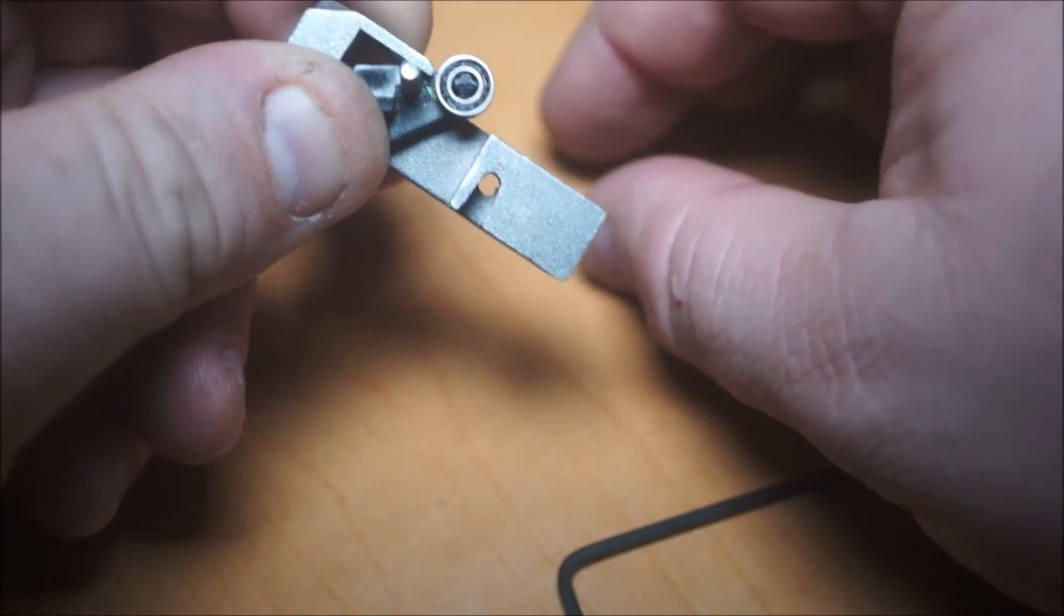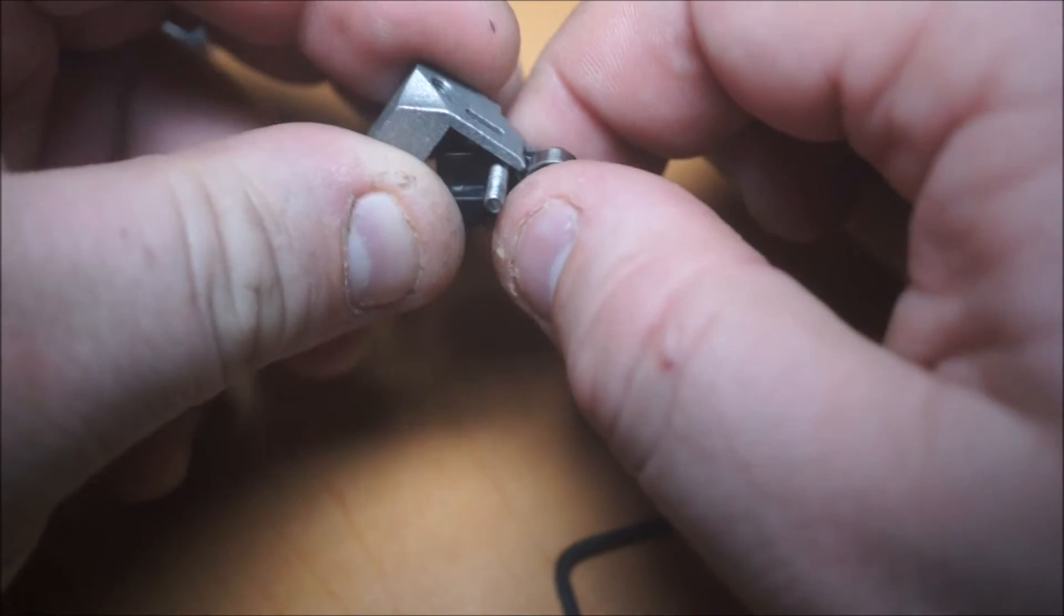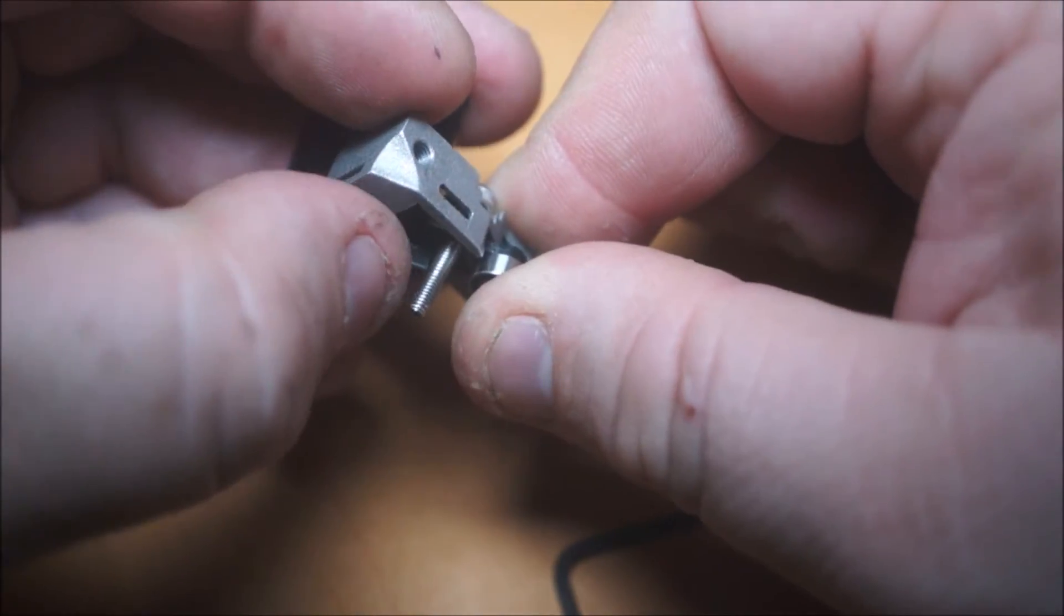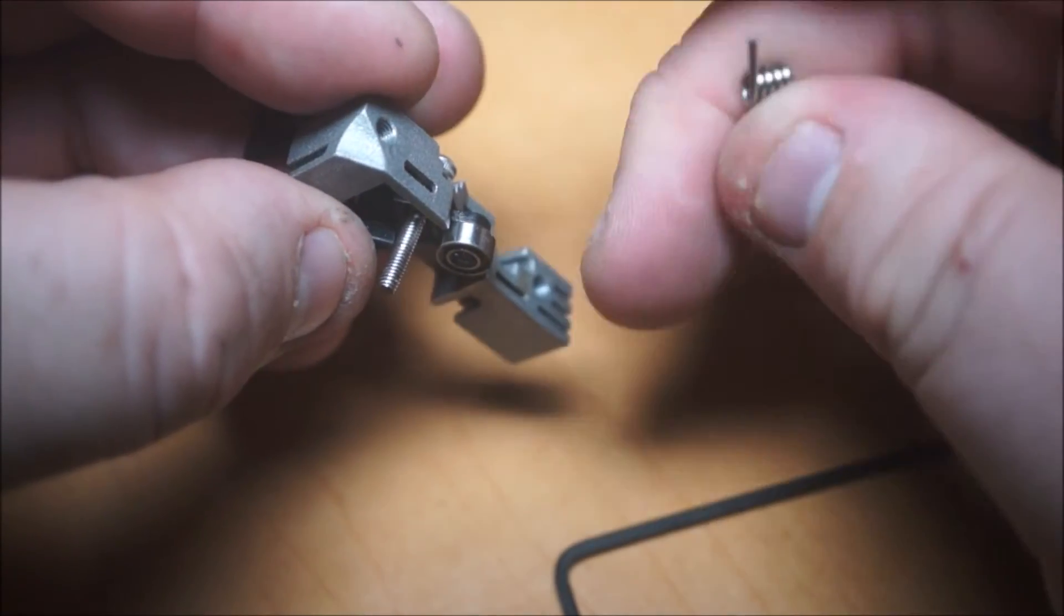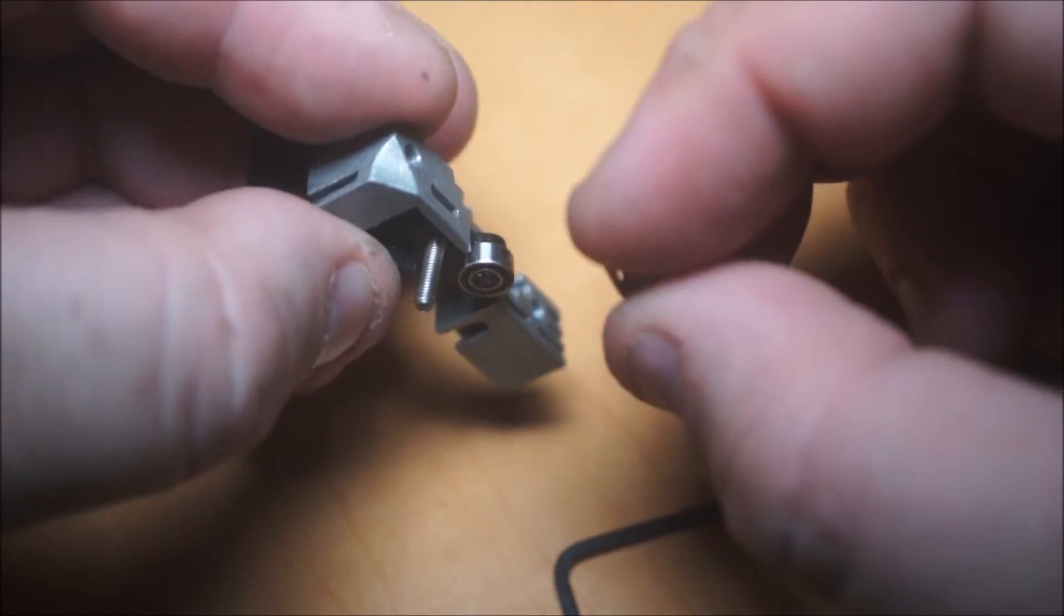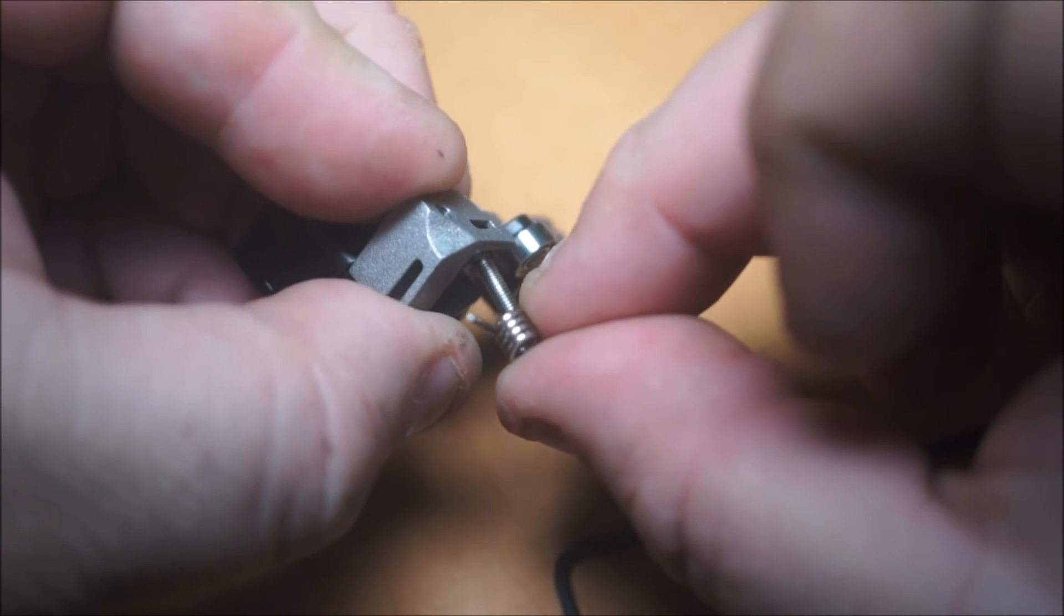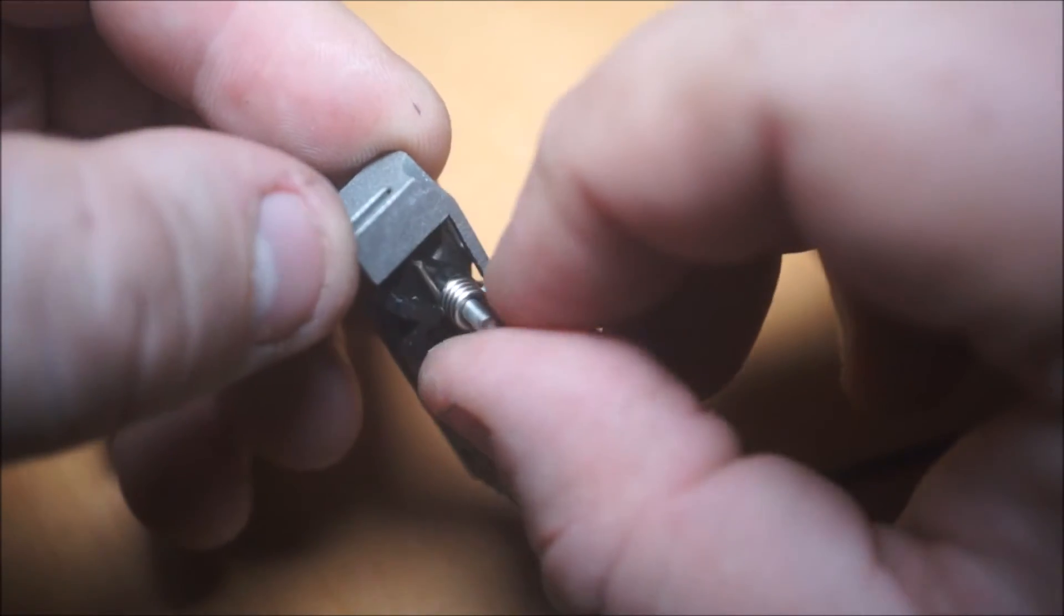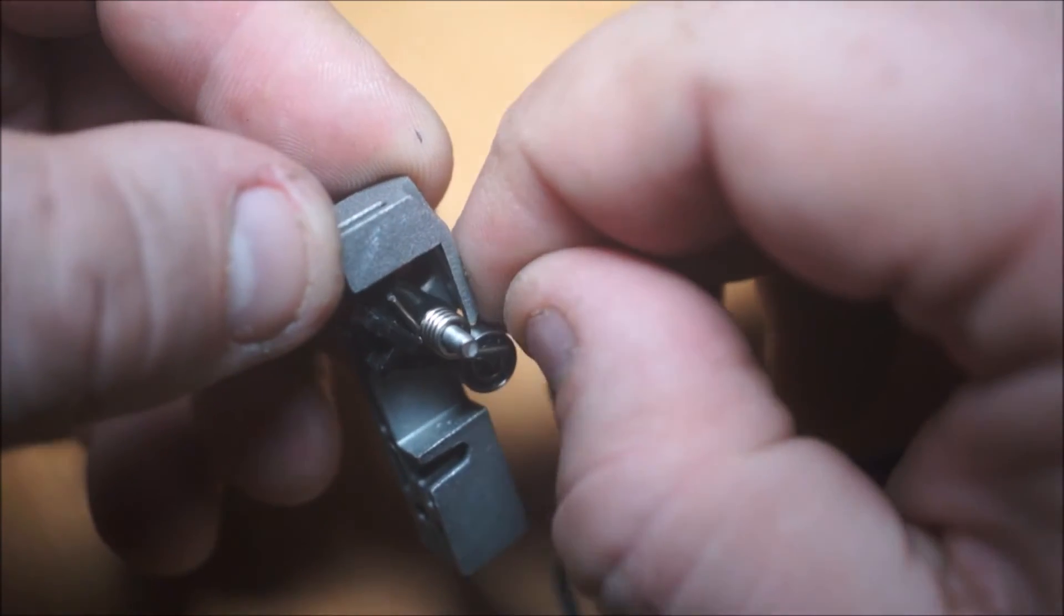So then the next thing you want to do is put the spring on. You can see right in here, there's a little line where one of these prongs of the spring sets. Actually, the spring rides right on that screw and it makes contact with that lever.